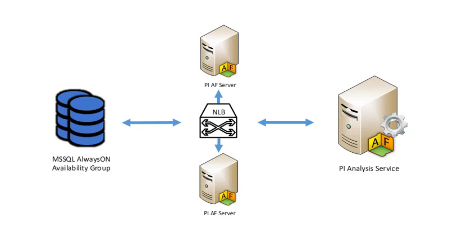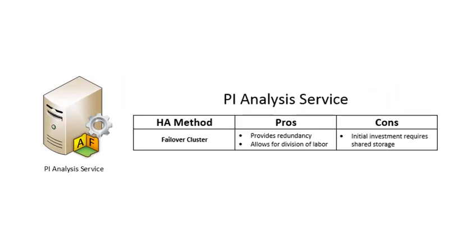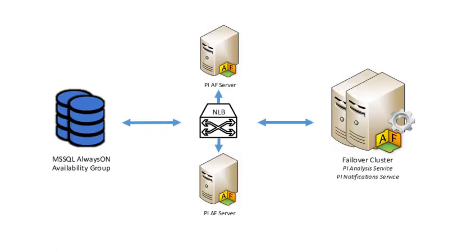Next, what we have is our PI analysis service. The PI analysis service must be configured in HA using a failover cluster. This provides redundancy and allows multiple services to cooperate in order to get your calculations done, but it requires that initial shared storage investment. I've added the failover cluster and the PI analysis service to the diagram. I've also added the PI notification service to it, because everything that was true about making the PI analysis service highly available is also true about the PI notification service.